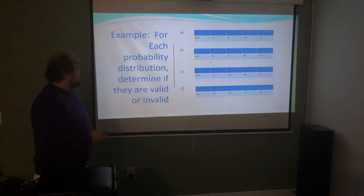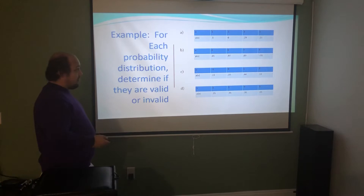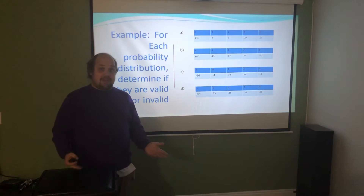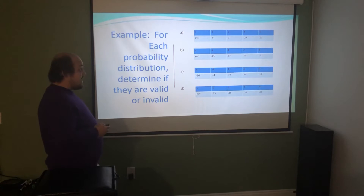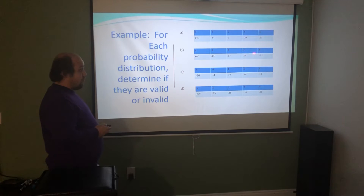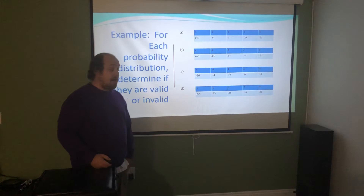For B: 0.01, 0.97, and 0.03 are each between 0 and 1, but there's a problem — negative 0.01 doesn't make sense. Nothing can occur with negative probability; it means something happens less than never. That negative 0.01 makes the entire probability distribution invalid. Even though the sum 0.01 + 0.97 + 0.03 − 0.01 = 1 passes the second test, it fails the first because of the negative probability.